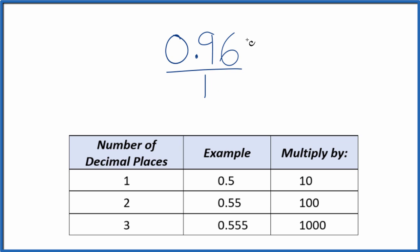What we need to do is get this number here, 0.96, to be a whole number. I can see we have two decimal places. So when we have two decimal places, we can multiply by 100. That'll give us a whole number.